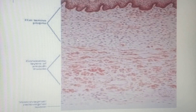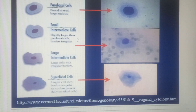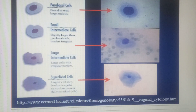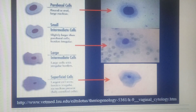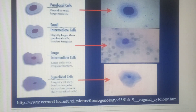Looking at the epithelium more closely — stratified squamous non-keratinized — the squamous cells can be categorized into parabasal cells, intermediate cells, and superficial cells. The parabasal cell is seen when there is a balance between estrogen and progesterone. It has a roughly rounded or oval nucleus, with a nucleus-to-cytoplasm ratio of approximately 1:2, and shows a vesicular nucleus with a centrally pale-staining area and deeper outer rim.